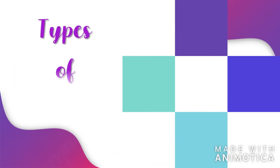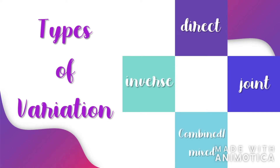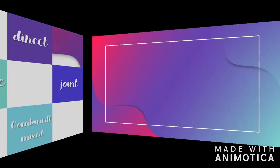There are four different types of variation. The first one is direct, the second one is inverse, the third one is joint, and the last one is combined or mixed variation. But for now, we are going to focus on combined variation.